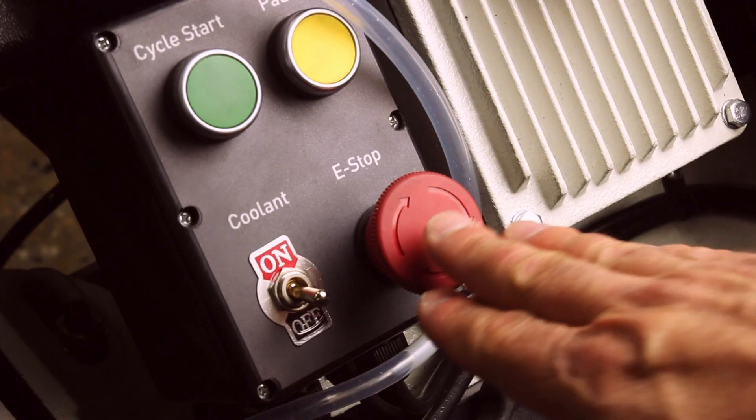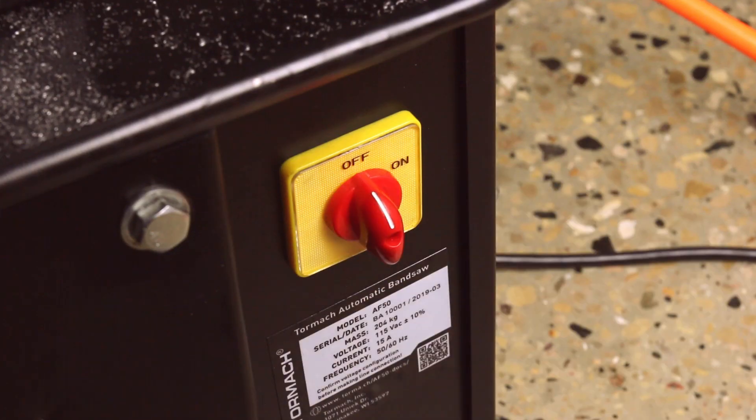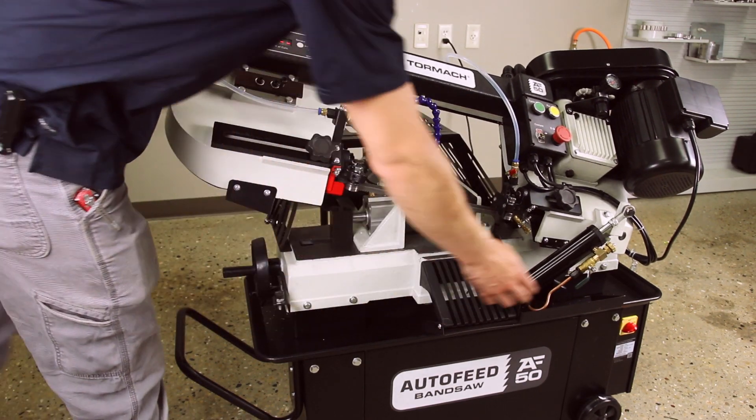Push the emergency stop button to lock it into the disabled position. Turn the main disconnect switch to off, which disconnects power from the machine. At this point, you've successfully verified the installation of your AF-50 bandsaw.